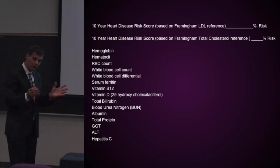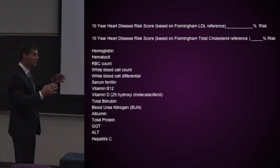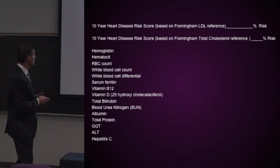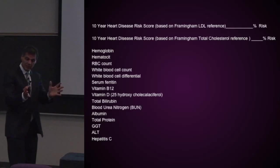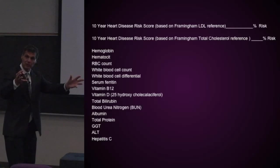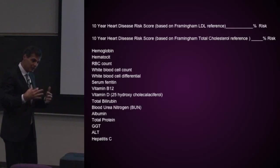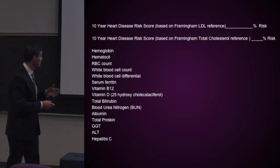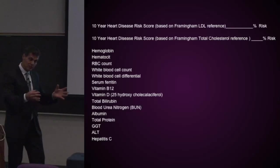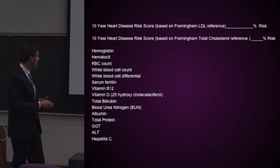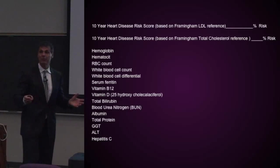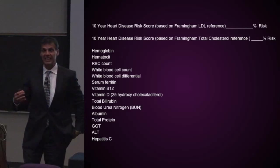And vitamin B12 — what's that level? Is it in the ideal range for prevention of cancer and making normal red blood cells? The vitamin D level is a marker for osteoporosis, multiple sclerosis, and also cancer risk. Total bilirubin tells me something about liver function. Blood urea nitrogen tells me something about kidney function. Total albumin, total protein in the bloodstream. These two liver tests are very important: GGT and ALT.